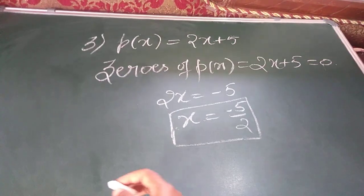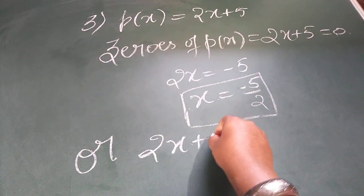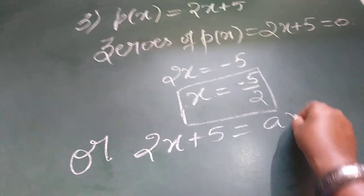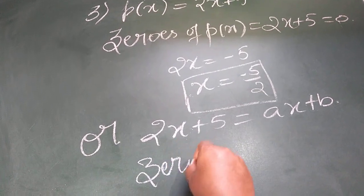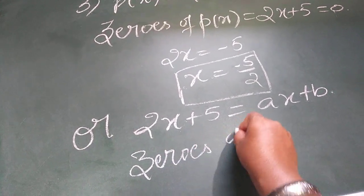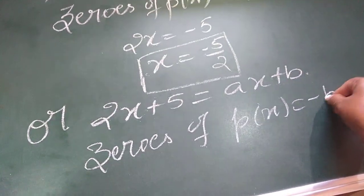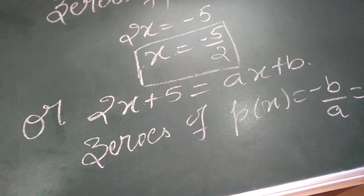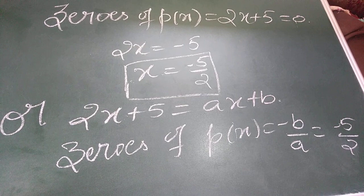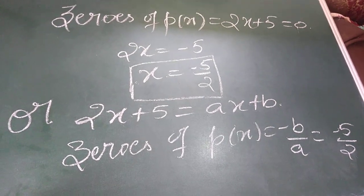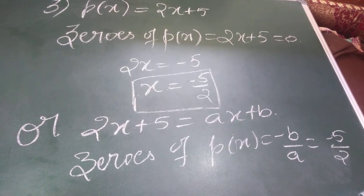In the alternate way, I can take 2x plus 5 is equal to Ax plus B. Zero of P(x) is equal to minus B by A, that equals minus 5 by 2 directly. Okay children, both the ways are correct. If you understand any one way, you practice that same way. Don't get confused with two of the ways.